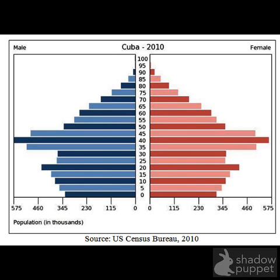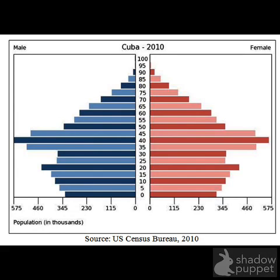Here's a population pyramid for Cuba in 2010. Looking at it, we can see that the largest number of people are in the 30s and 40s age group, which is where the pyramid is widest. As we move up the pyramid, there are fewer and fewer people. We can ask why — is it because of nutrition, health care, or other factors that affect how long a person lives in Cuba? These are the kinds of questions posed when we analyze population data this way.